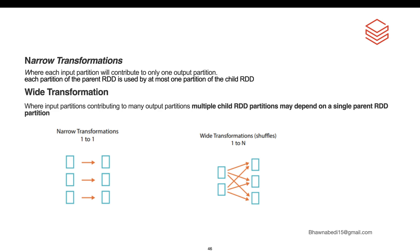Now let's say you want to do a join. The data is usually present in multiple partitions. To do the join, you will actually need to read from both partitions - and the moment you need to read from both partitions, there is a shuffle happening. There may also be more number of partitions created. That is called a wide transformation. One partition can lead to three different new partitions. This is what is called a wide transformation.